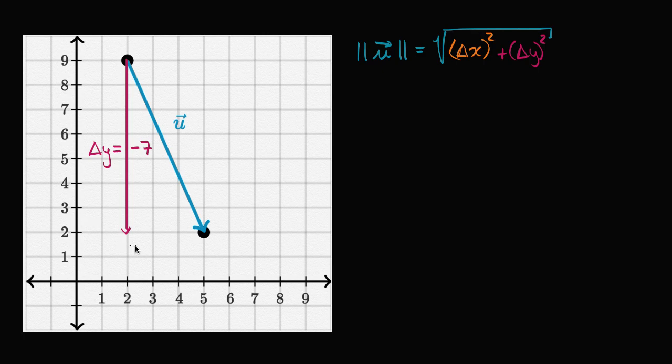Similarly, our change in x: we're going from x equals two to x equals five. Our change in the horizontal direction is plus three. We can think of this as the horizontal component of the vector, which equals positive three.